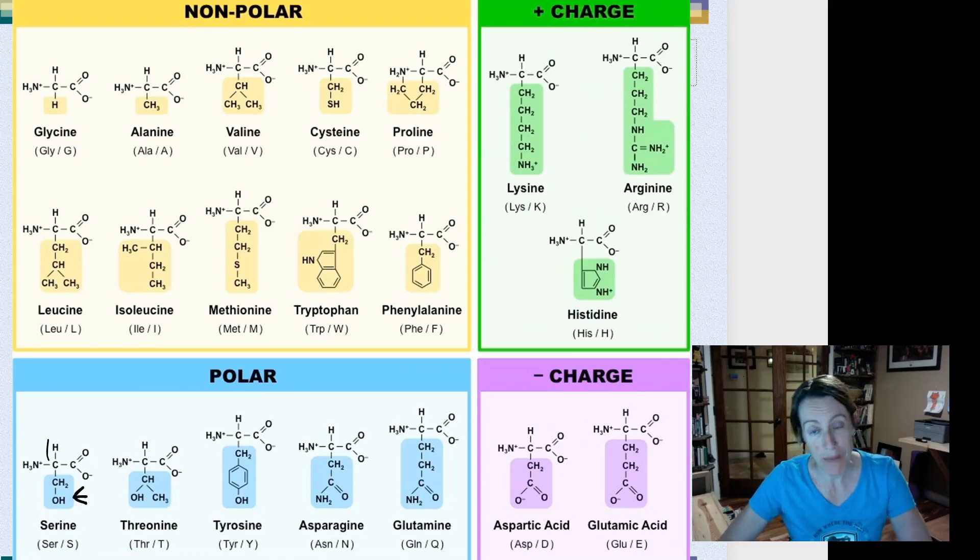But what is important about this slide is to look at these side chains of all these amino acids. Again, the parts that are highlighted in the colored squares. And we categorize amino acids by the nature of their R groups. And we call them hydrophilic or hydrophobic. And these are terms that you should already remember from unit one.